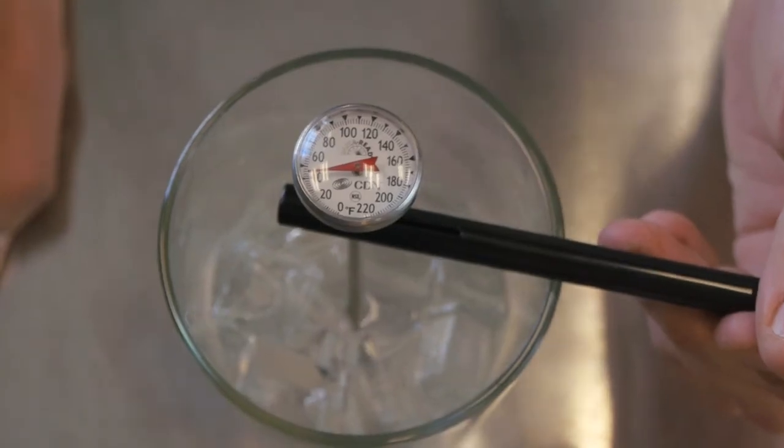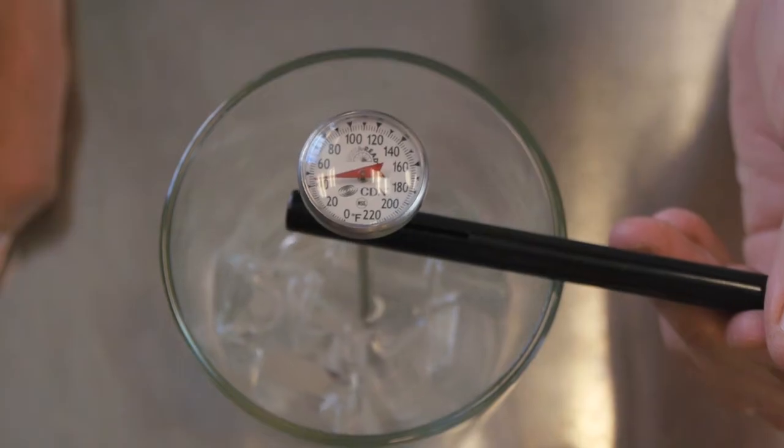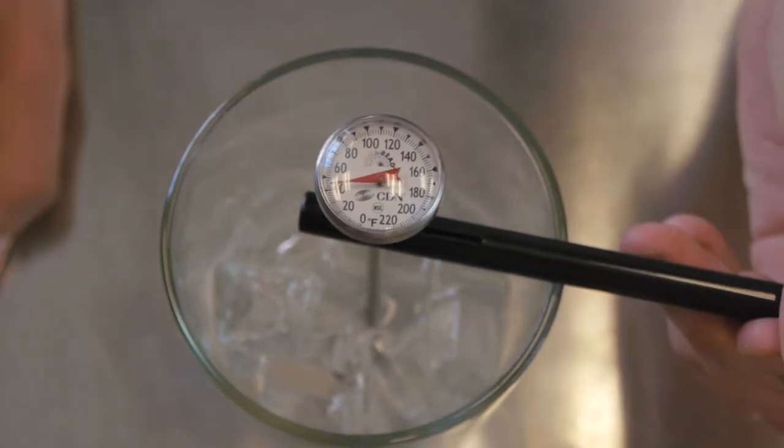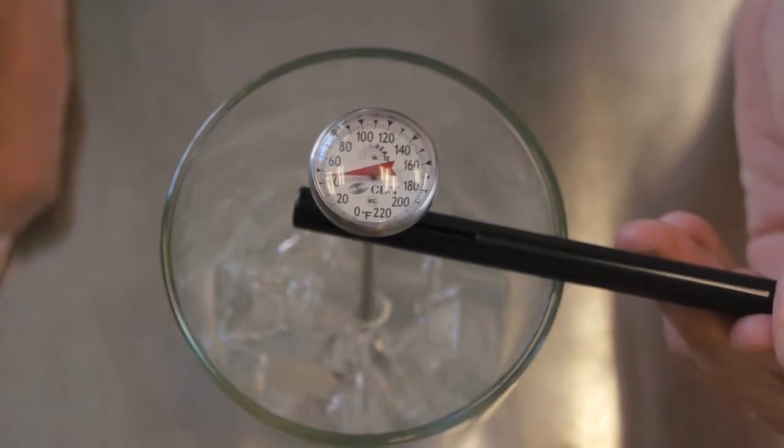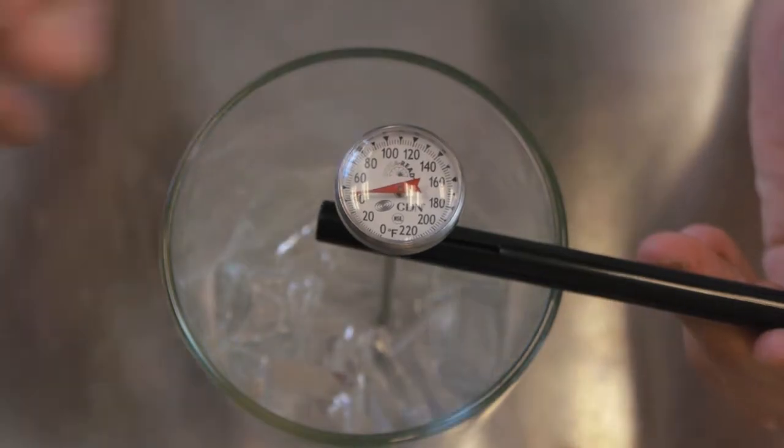So right now we see 40 degrees Fahrenheit, but we also know that ice water should be 32 degrees. So basically what we need to do is decrease and calibrate this thermometer down 8 degrees.